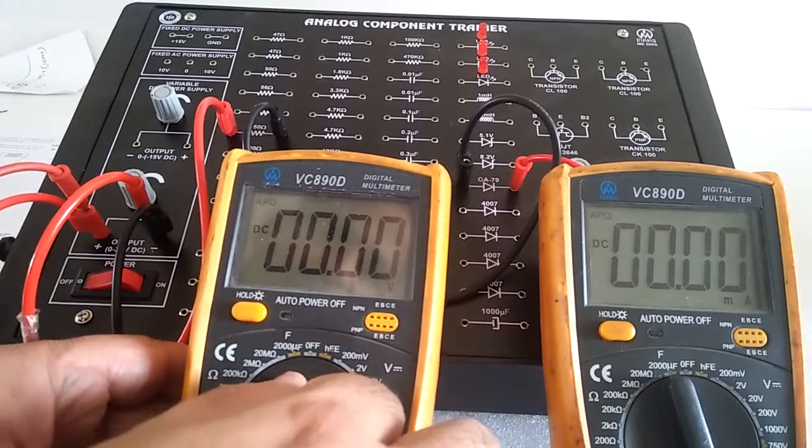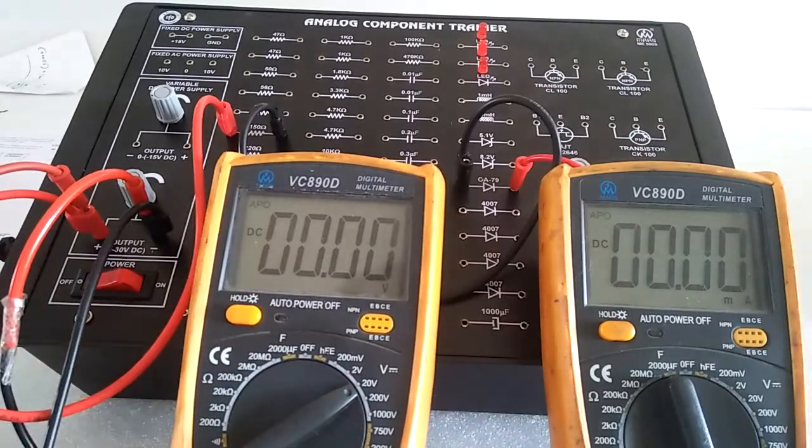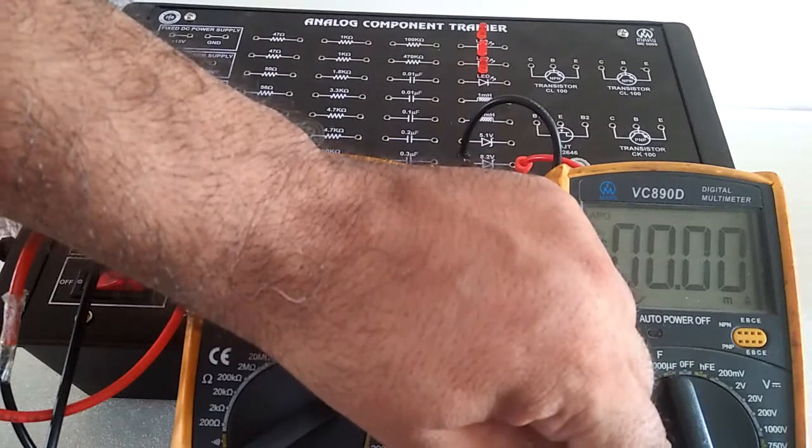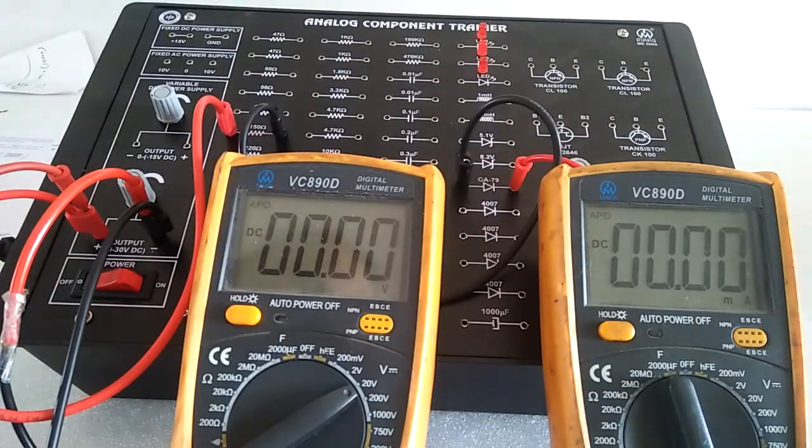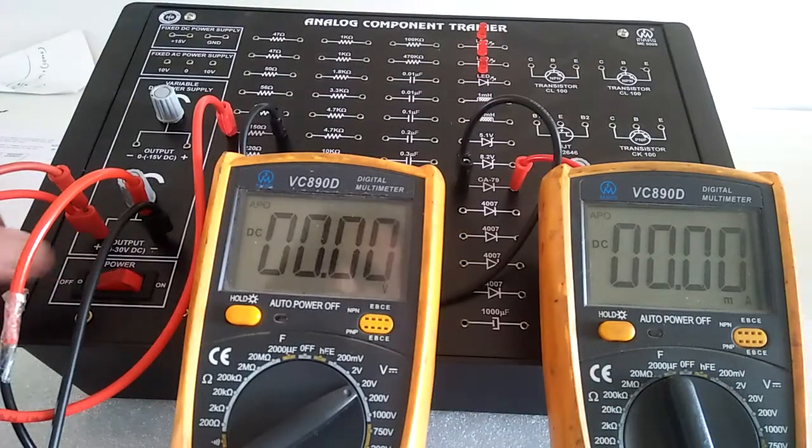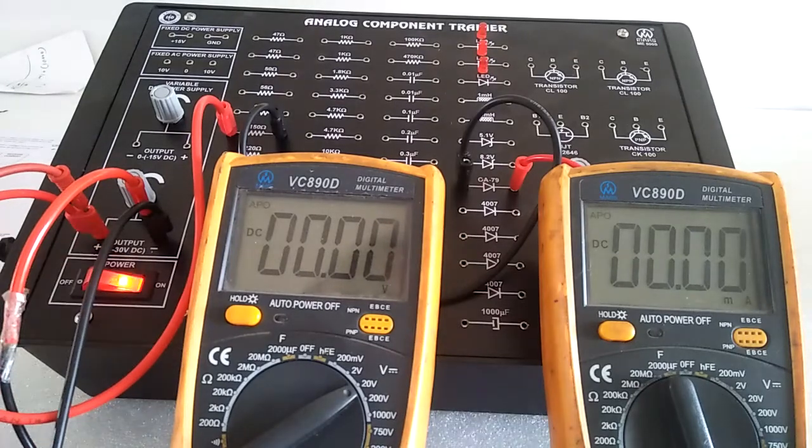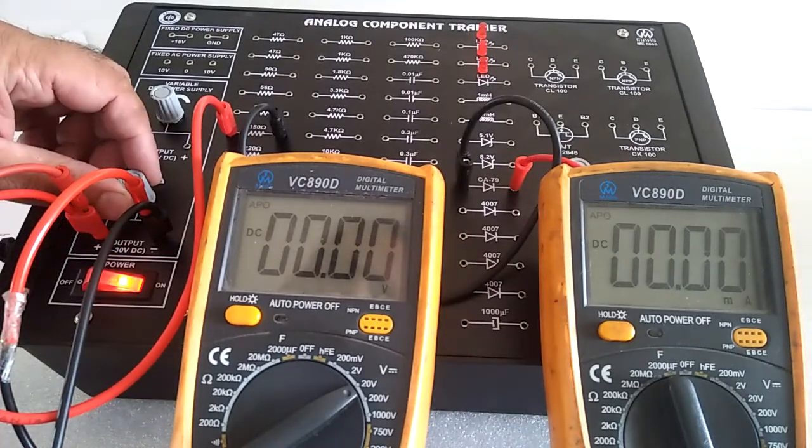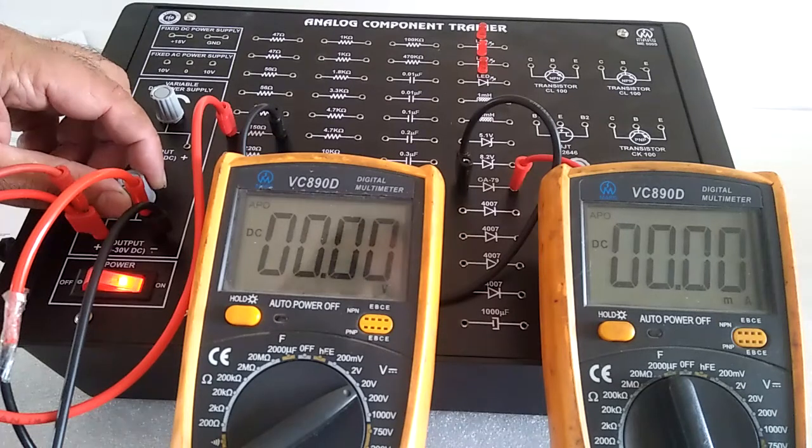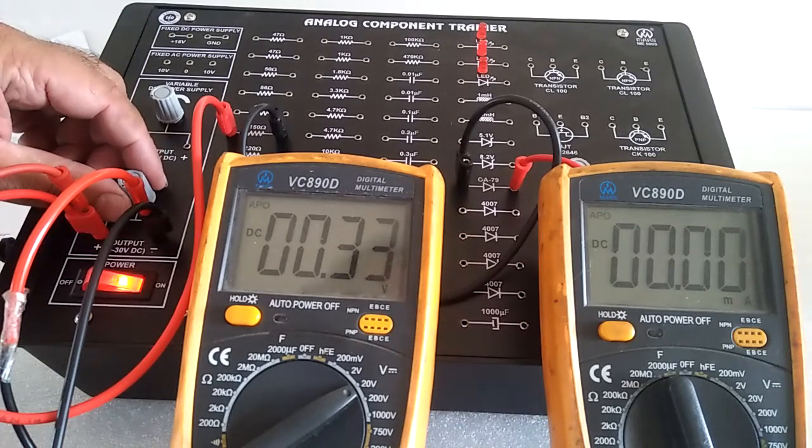Set the range voltage and set the DC current meter range. Switch on the supply. Increase the voltage.